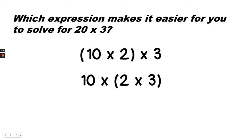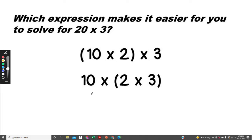Which expression makes it easier for you to solve for 20 times 3? Would it be easier to multiply 10 times 2 and multiply that product times 3? Or would it be easier to multiply 2 times 3 and then multiply that product by 10?